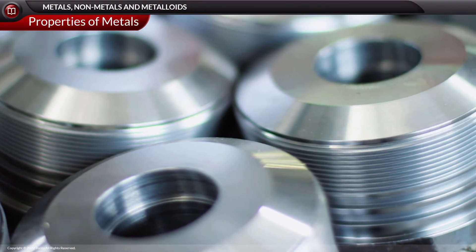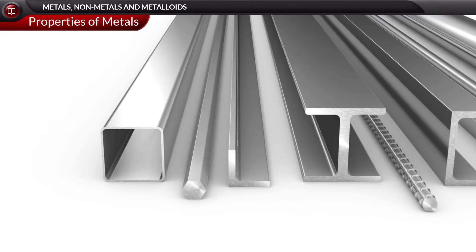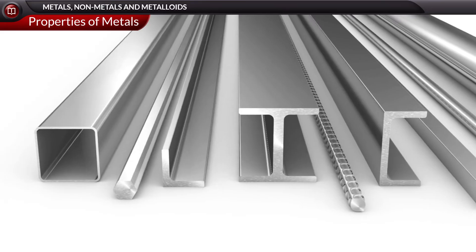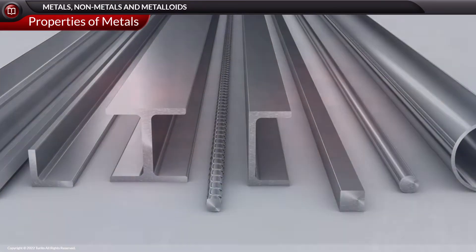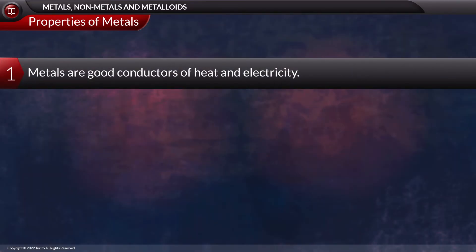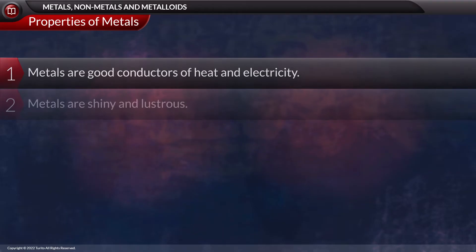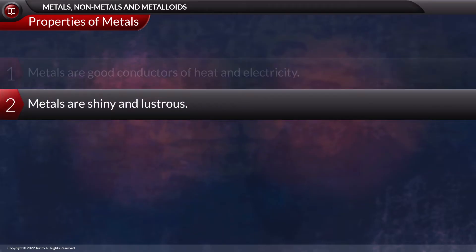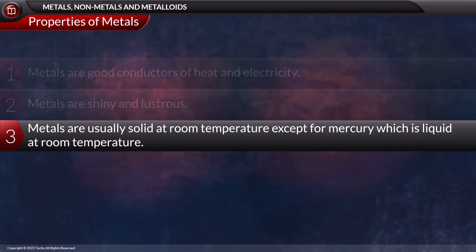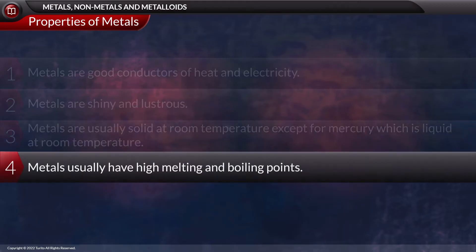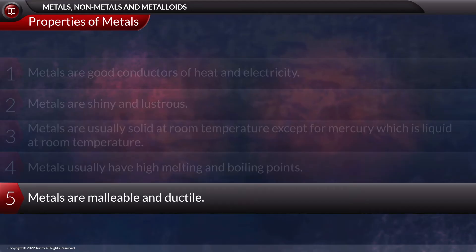Let us now study the properties of metals, followed by that of non-metals. Metals are good conductors of heat and electricity. Metals are shiny and lustrous. Metals are usually solid at room temperature, except for mercury, which is liquid at room temperature. Metals usually have high melting and boiling points. Metals are malleable and ductile.